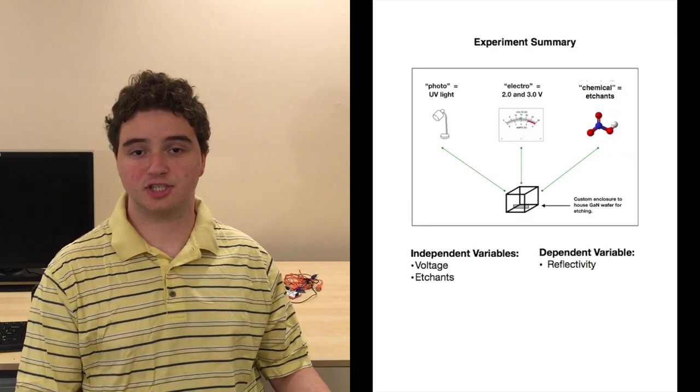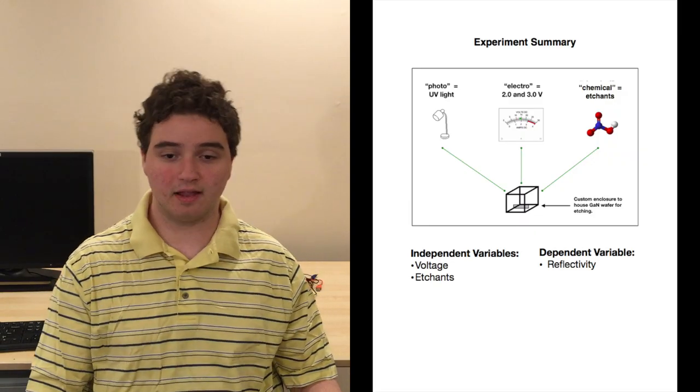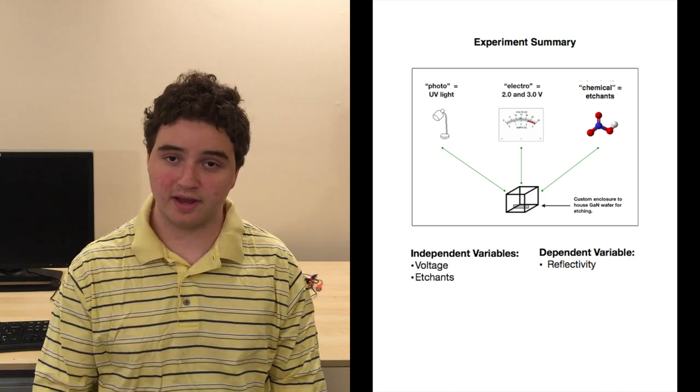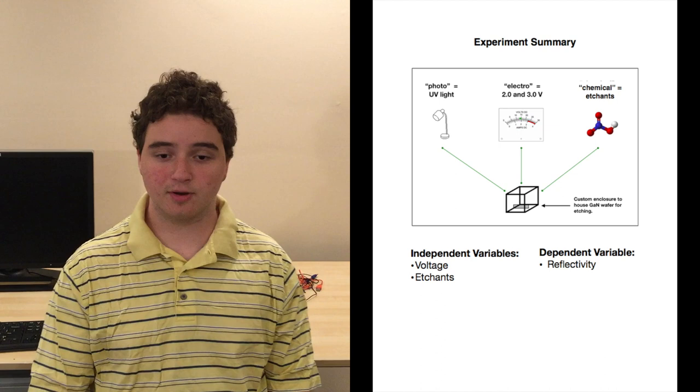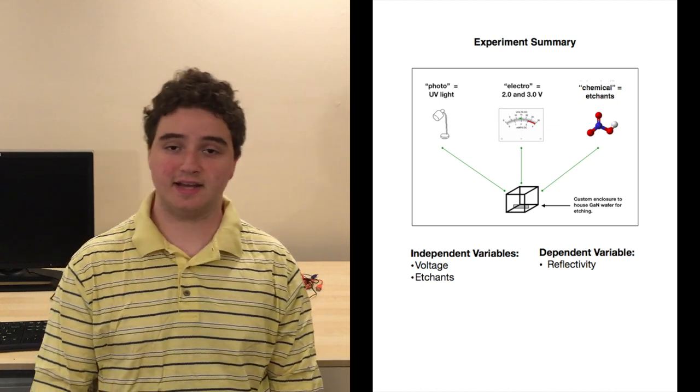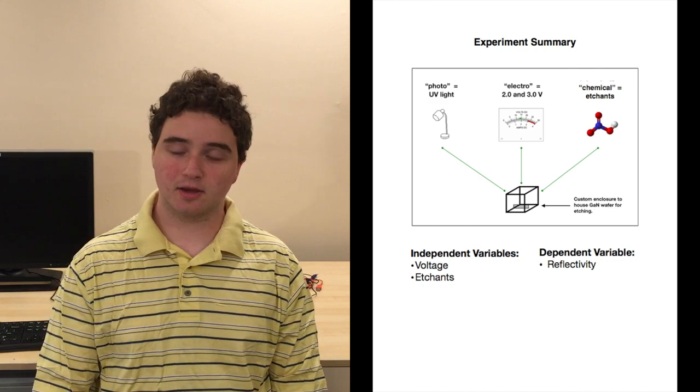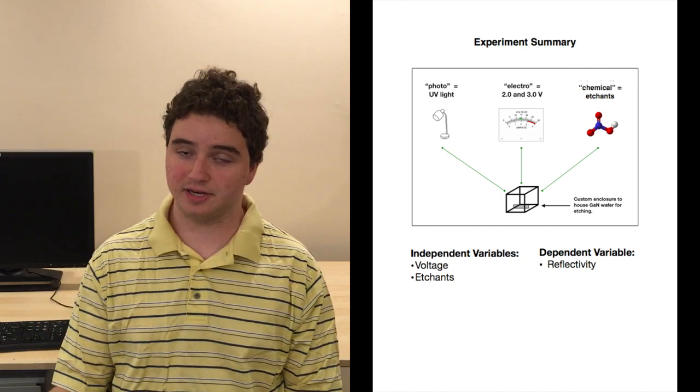I used photoelectrochemical etching to alter the surface morphology of gallium nitride wafers. This process entailed finding the right combination of UV light, electric current, and chemical etchants to create an anti-reflective surface morphology. I built a custom enclosure and combined these forces in various combinations.